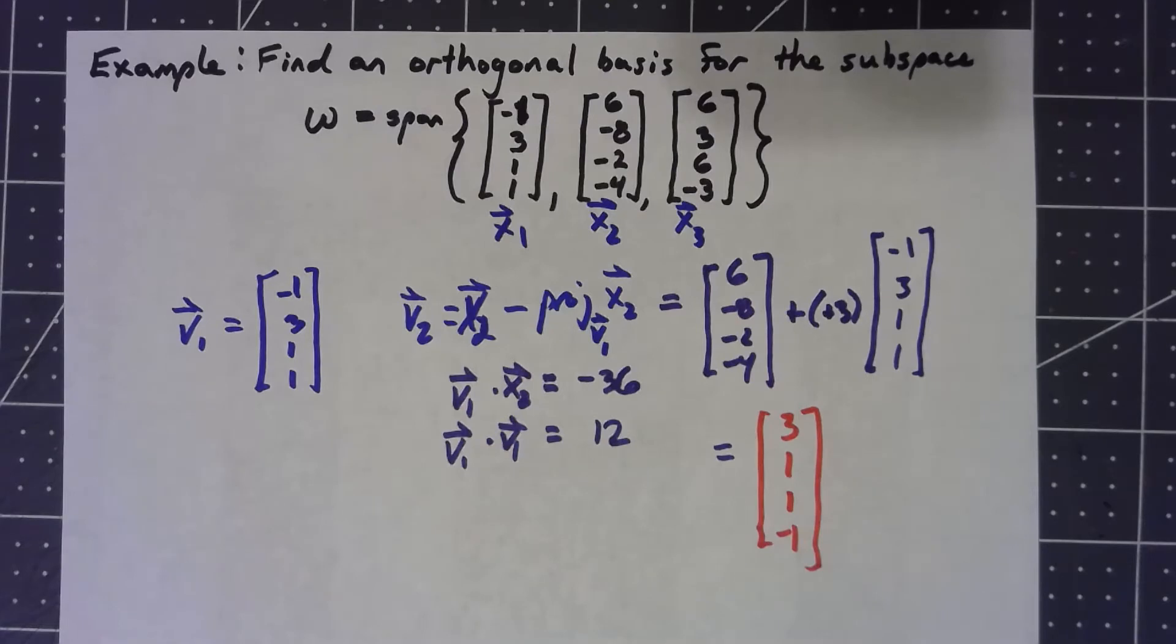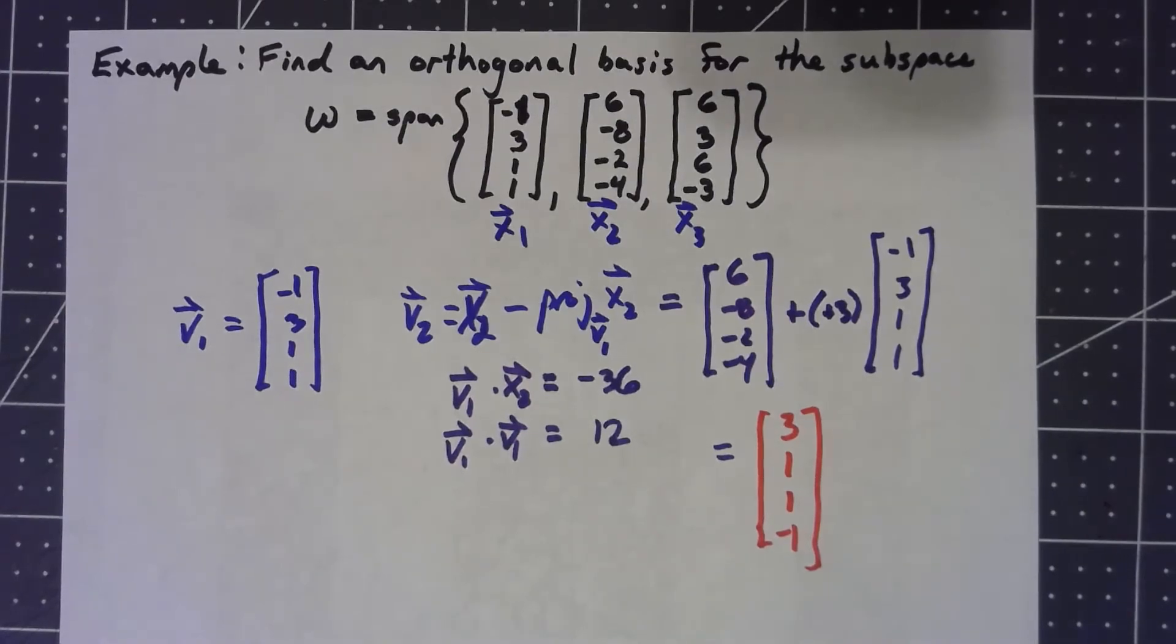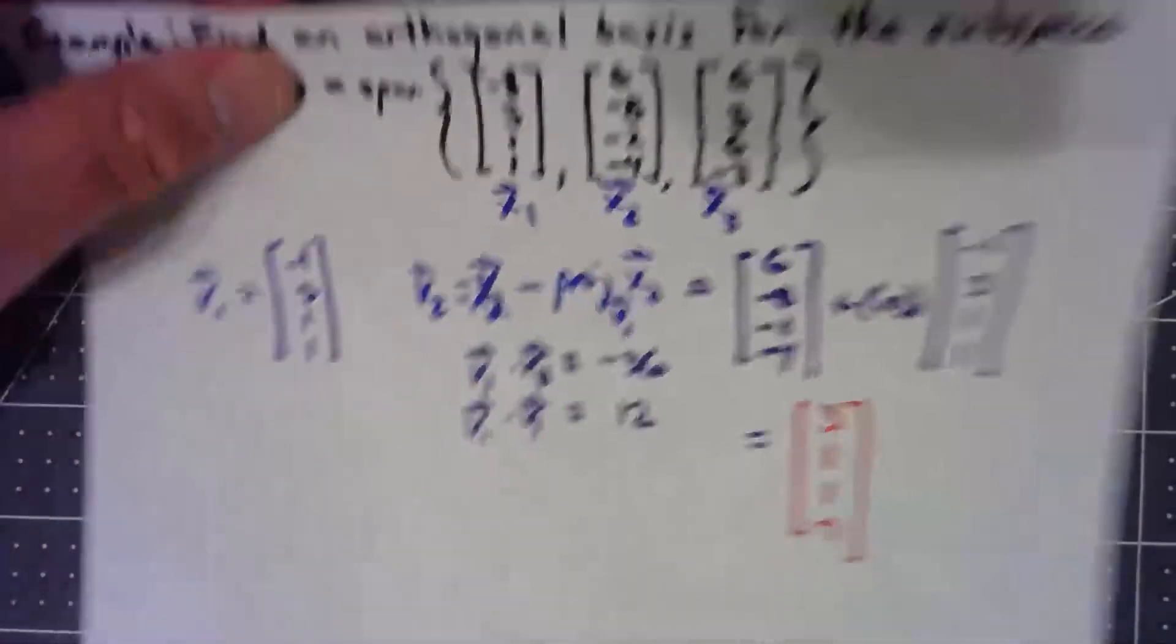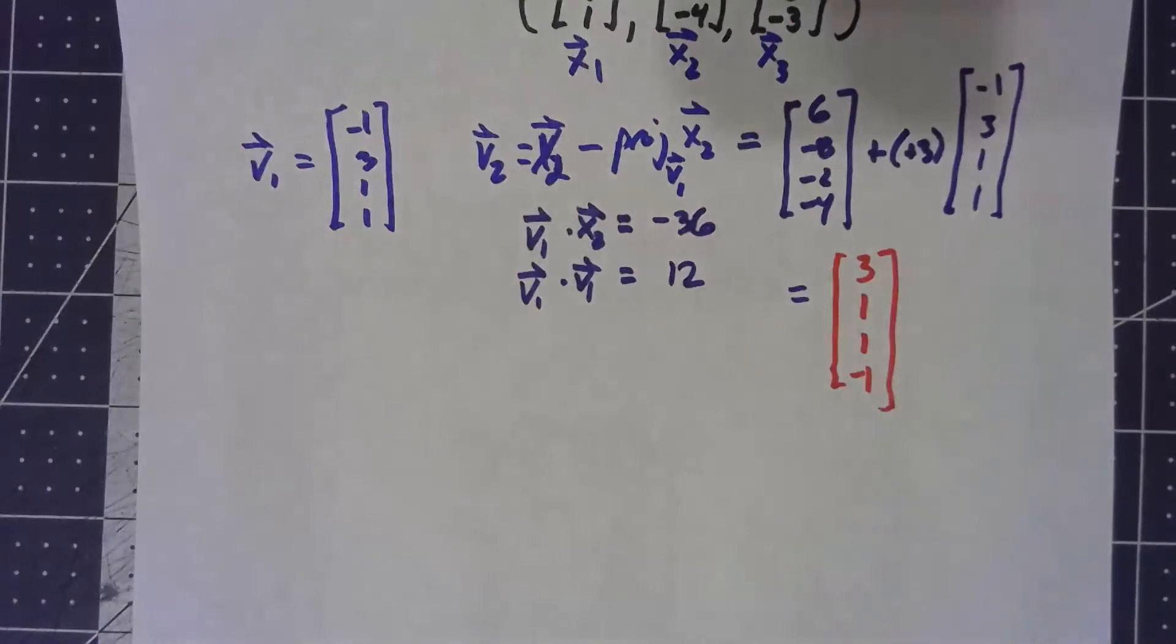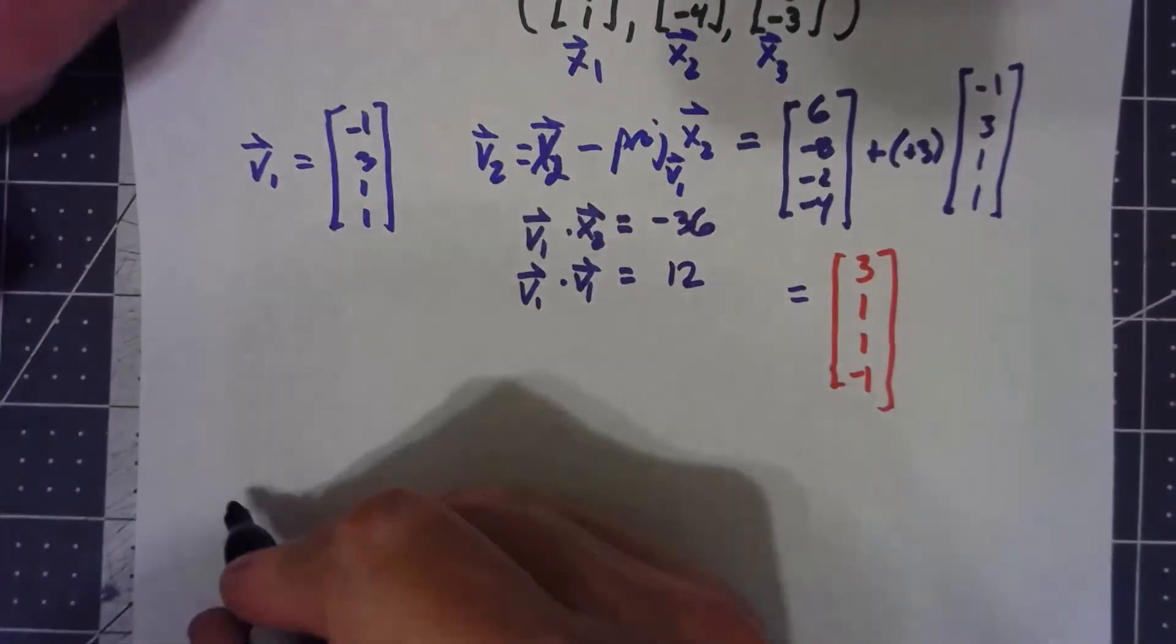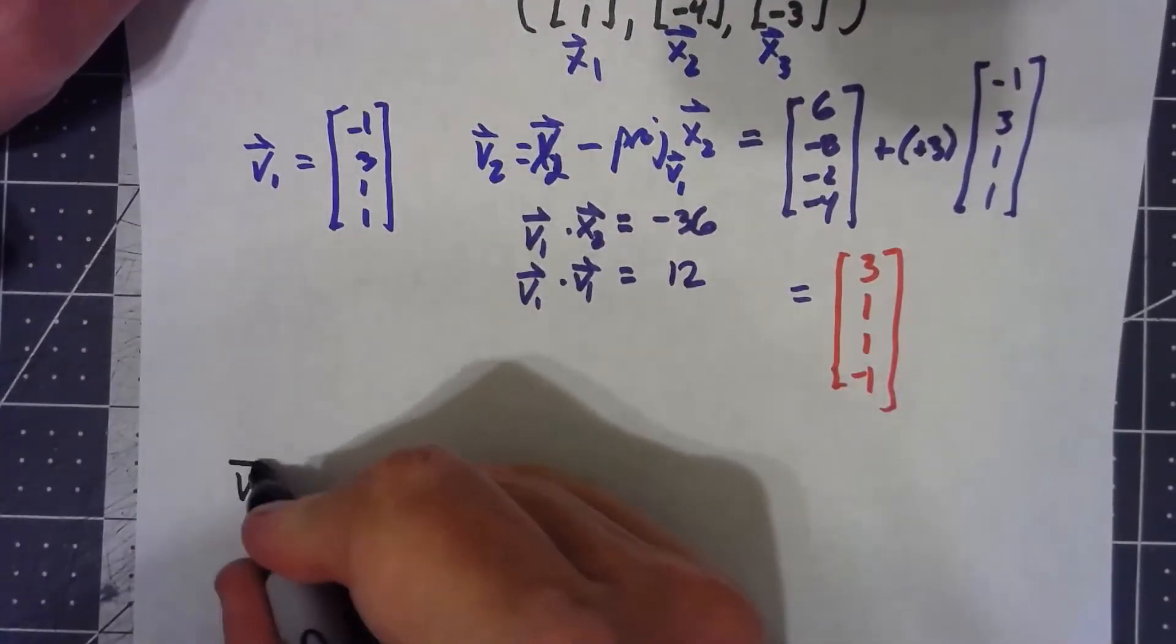Now comes the hard part. In general, each one of these steps, each one of these vectors that we try to find, there's more work to finding it. It gets harder to do, more places to make mistakes. But the basic idea now, to find my third basis vector, and fortunately after this we're done.